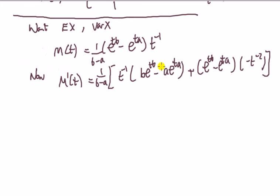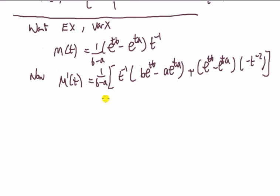What I've done is used the product rule. If you left t on the bottom you could also use the quotient rule, but I always try to avoid the quotient rule. The product rule is easier in many instances just because you're avoiding fractions — it just looks less messy.